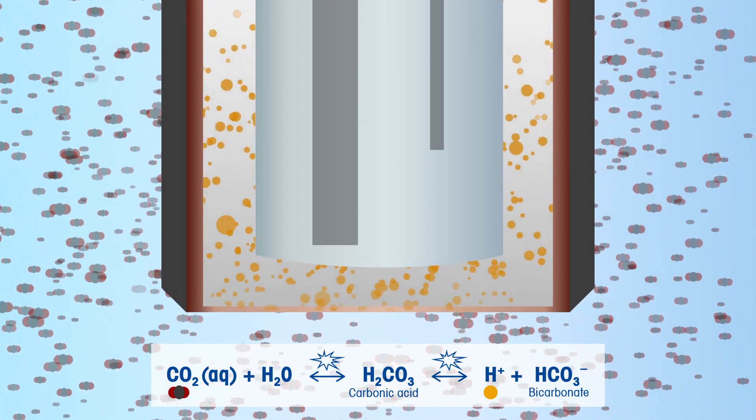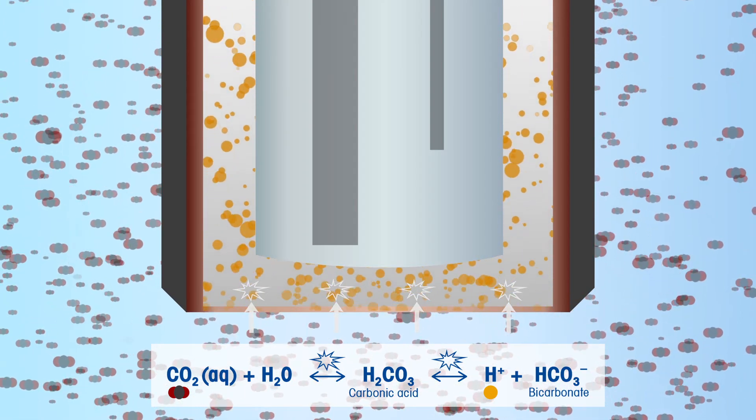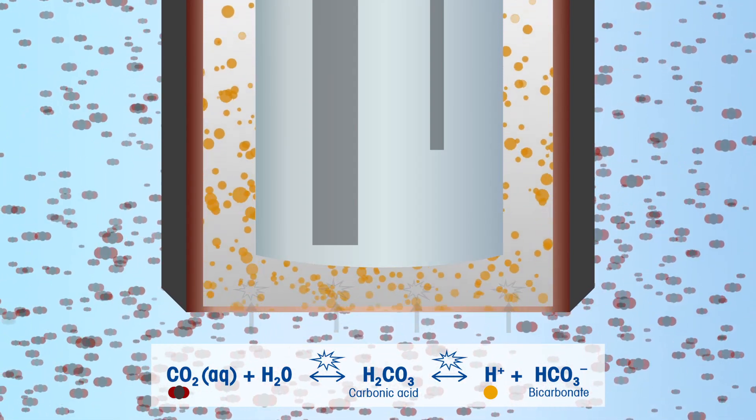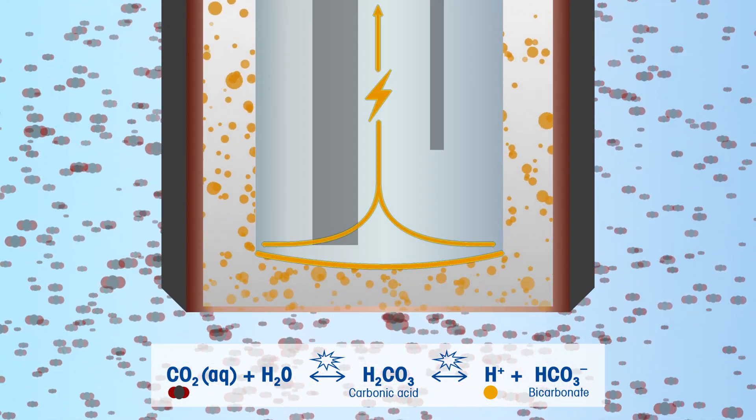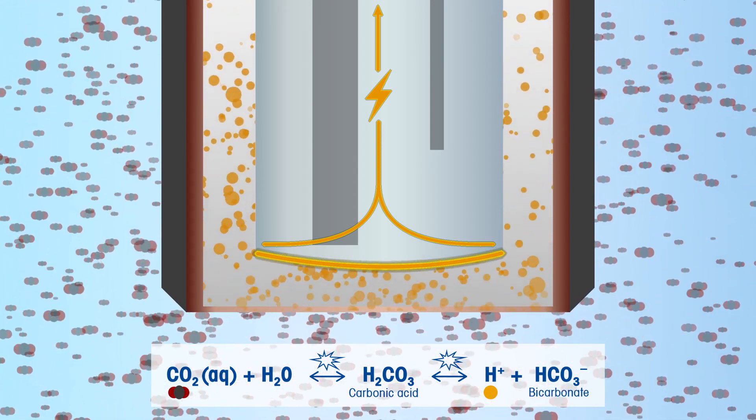The NPRO 5000i measures dissolved CO2 following the Severinghaus principle, where CO2 gas permeates through a membrane and reacts with a bicarbonate electrolyte solution. A pH electrode immersed in the electrolyte measures the pH change. This change is dependent on the dissolved CO2 concentration in the liquid being measured.